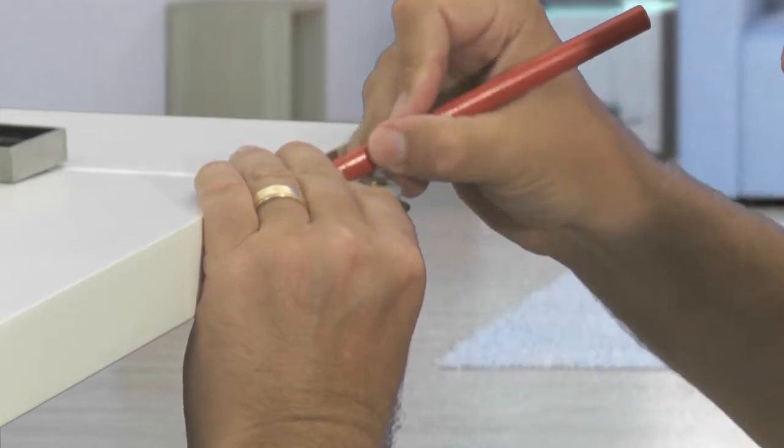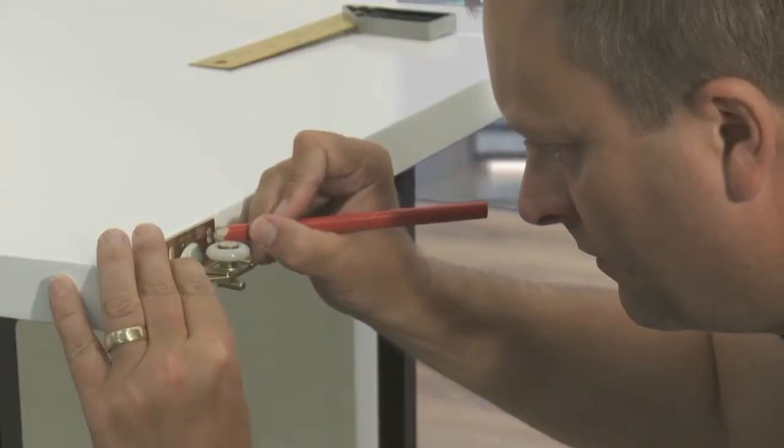Line the hanger plate with the edge of the door and then mark out the pilot holes for the hangers screws.